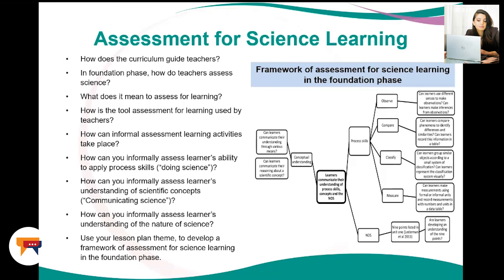Assessment basically happens informally throughout the learning activities through questioning, concept maps, and learner communication when learners talk, writing in their science journals, and engaging in art and drama activities. When you informally assess the ability to apply process skills, you should be able to name and describe the science process skills and incorporate them into your lessons. The curriculum requires learners to perform these skills during the science investigation.